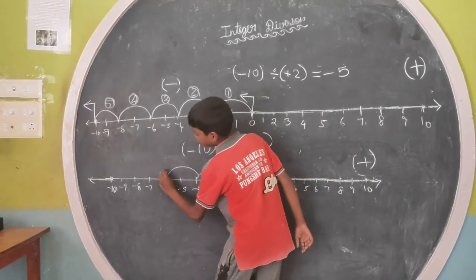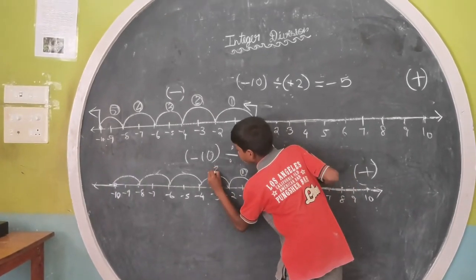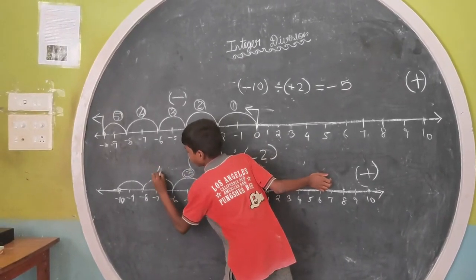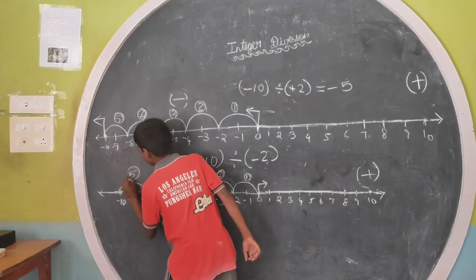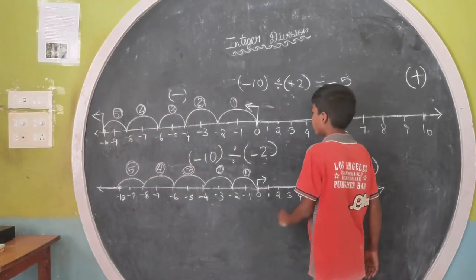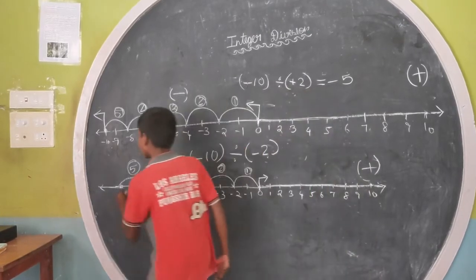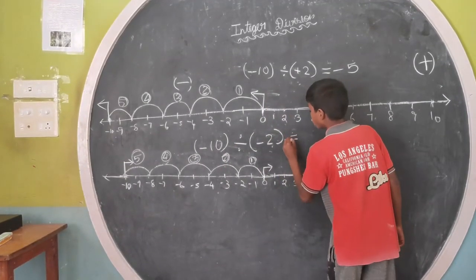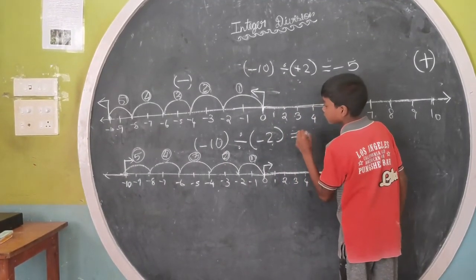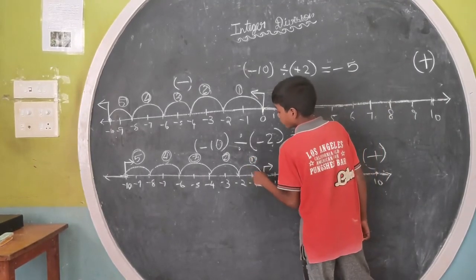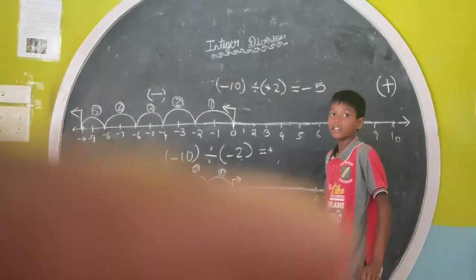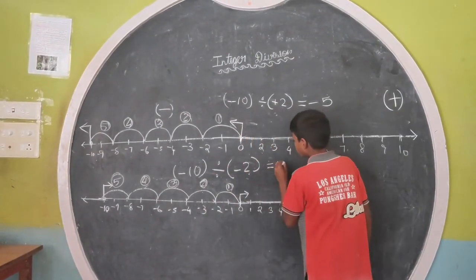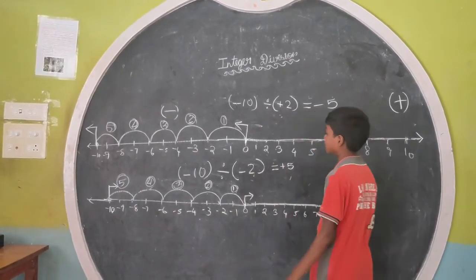2, 3, 4, 5. Move 5 steps. We put plus. We go 5 steps. We go 5 jumps. We put 5. The answer is plus 5. Thank you.